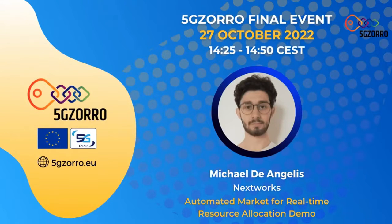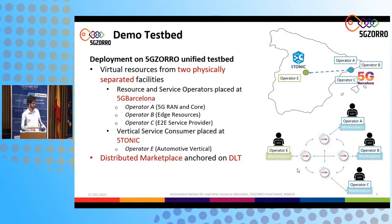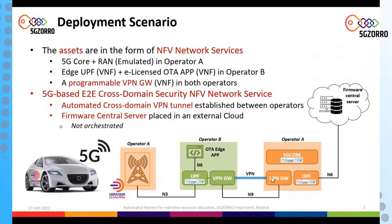Operators A, B, and C take place in the 5G Barcelona testbed, while Operator E, the automotive vertical, is in the Fectonic testbed here in Madrid. The assets offered by Operator A and Operator B are in the form of network services. The network services for the core offered by Operator A comprise a 5G core, an emulated radio access network, and a programmable VPN gateway. Operator B offers a network service comprising edge resources and a firmware application that will enable the car to pull and update its firmware.